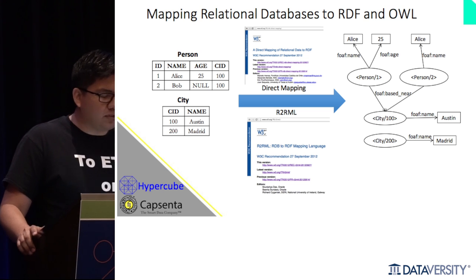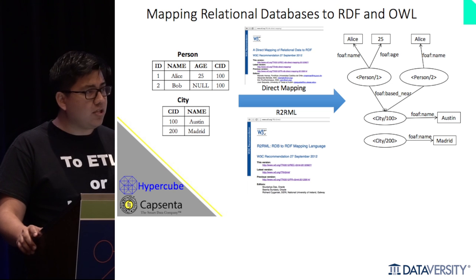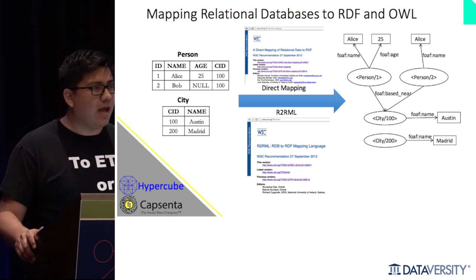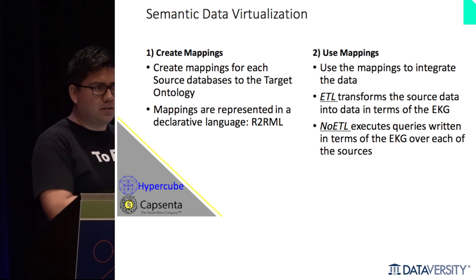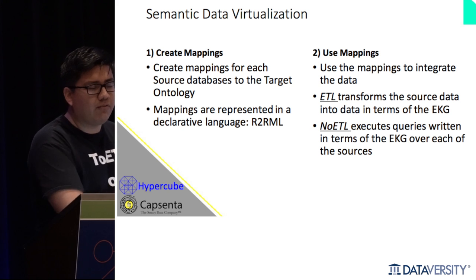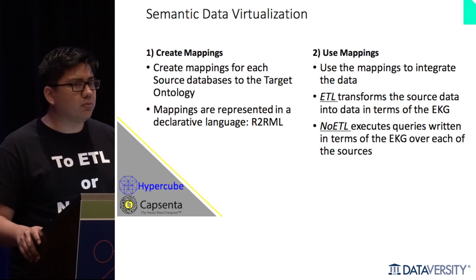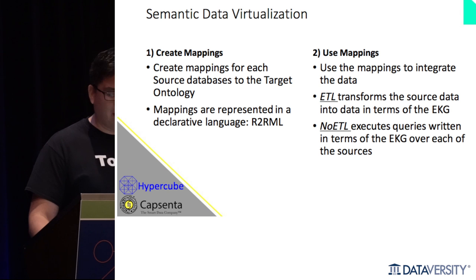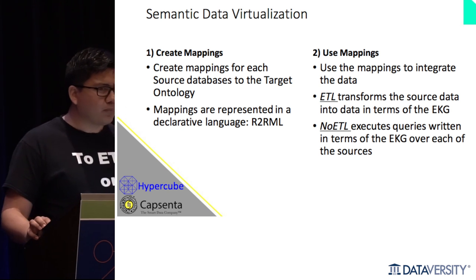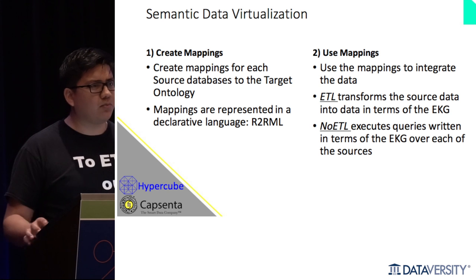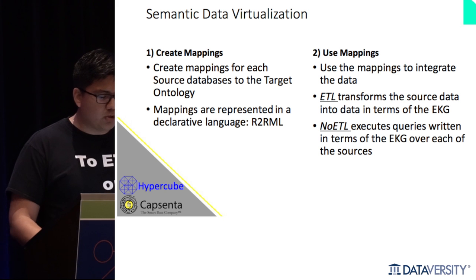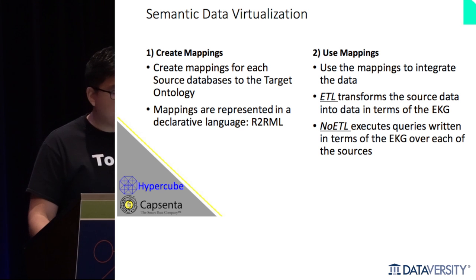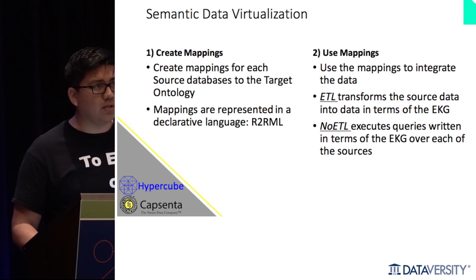In semantic data virtualization, you want an EKG as your homogeneous view of all your heterogeneous sources and map all your data sources to that EKG. The question is whether to translate data to fit this graph data model via ETL, or to use the no-ETL approach. Because we're using semantic web standards — RDF, OWL, SPARQL — this is all a graph data model. To get legacy sources working with this semantic technology, we essentially need to map relational data into a graph, into RDF.